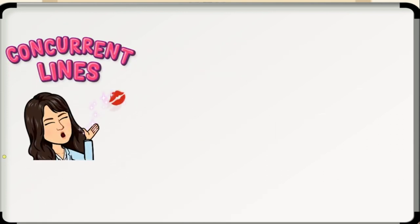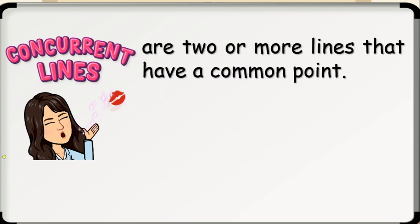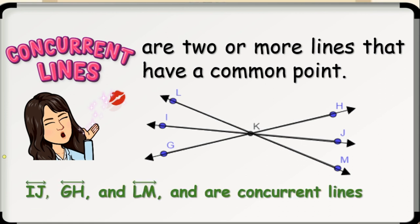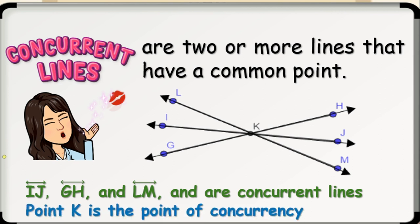Next, we have the concurrent lines, which are two or more lines that have a common point. Here is an example, where line IJ, line GH, and line LM are concurrent lines. And point K is the point of concurrency.